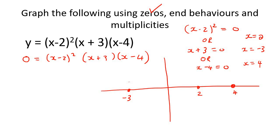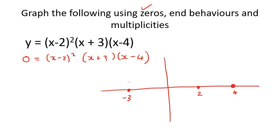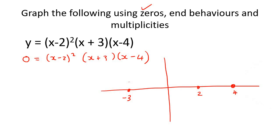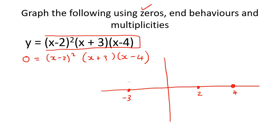The next thing we're going to look at is end behavior. What end behavior means is what does the graph do at the end — on the right-hand side, does it go up or does it go down? And then on the left-hand side, does it go up or does it go down? That is what we call end behavior.